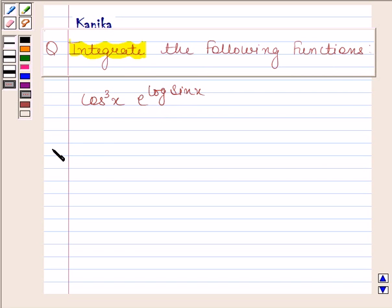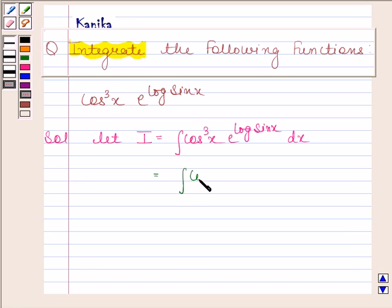Let's now begin with the solution. Let I = ∫cos³x e^(log sin x) dx. This is equal to ∫cos³x sin x dx.